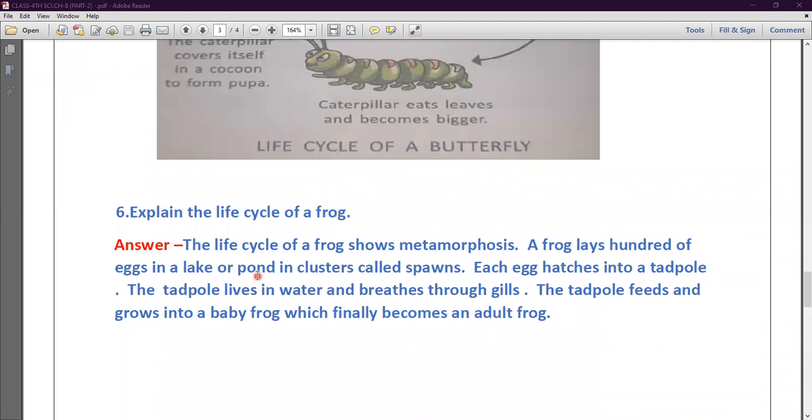Each egg hatches into a tadpole. The tadpole lives in water and breathes through gills. The tadpole feeds and grows into a baby frog which finally becomes an adult frog.